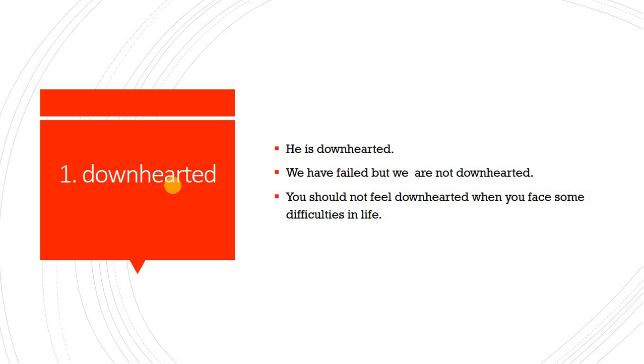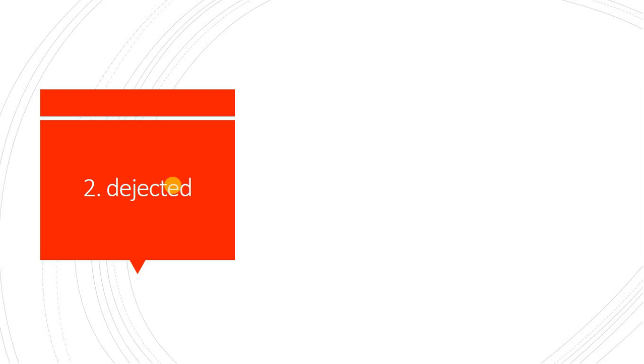Number two: 'Dejected.' Dejected also means sad with little hope. Dejected ka matlab hai koi shakhs jo udaas ho aur umeed bhi us ki bahut kam ho — yaani us ki umeed toot chuki ho. To us ko hum dejected kehte hain.